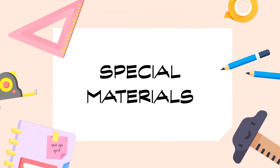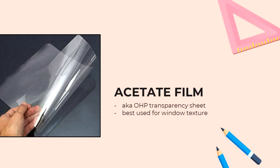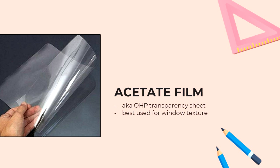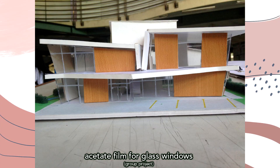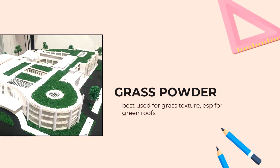Now let's talk about some special materials you can use for your sketch models. I call these special because they're things you can use if you want your models to have more detail. First, we have acetate — this is what we use for window textures. If you want to show that there are glass windows in certain parts of your building, you can use acetate. It's very easy to cut and to use. Next, we have grass powder — I'm not sure if that's what you call it because I call it felt powder, but when I search on Shopee it says grass powder. This is something I also used for my thesis model and it really elevates the look. It doesn't require much effort — just Elmer's glue and then drop it on. It's a great way to level up your model without much work, and if you have a green roof, I highly recommend it.